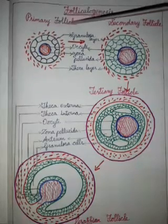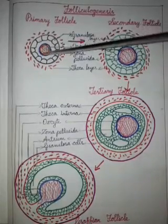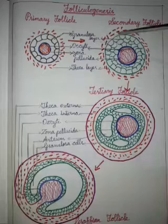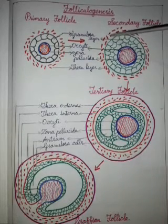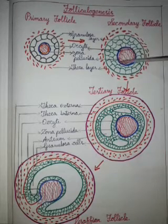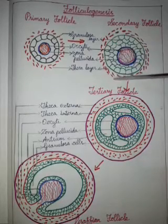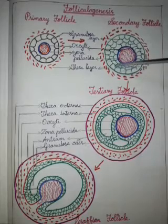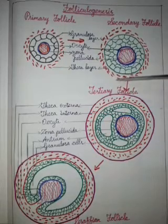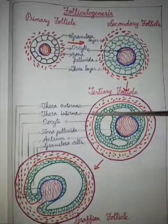Looking at the diagram: the primary follicle has a single granulosa layer surrounding the primary oocyte. As development proceeds, the follicle gains a theca layer and a zona pellucida layer. This forms the secondary follicle with many layers of granulosa cells. The secondary follicle then forms the tertiary follicle, where the outer theca layer differentiates into the theca externa and theca interna.